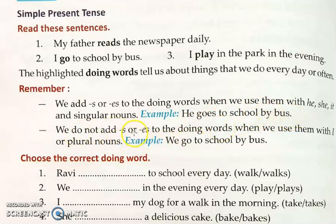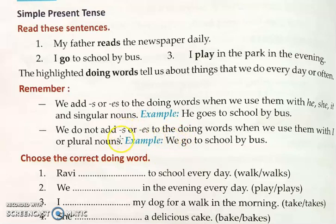We do not add S or ES to the doing words when we use them with I or plural nouns. When talking about myself I say 'I go to school by bus.' When talking about many people — 'we' means all of us — 'We go to school by bus.' With I and plural nouns, no S or ES is added.